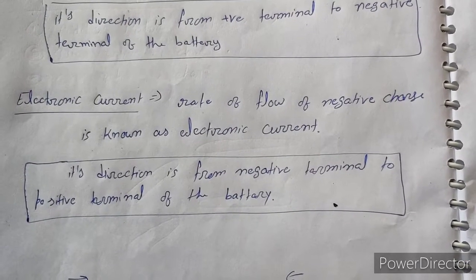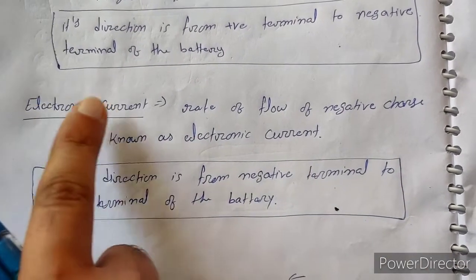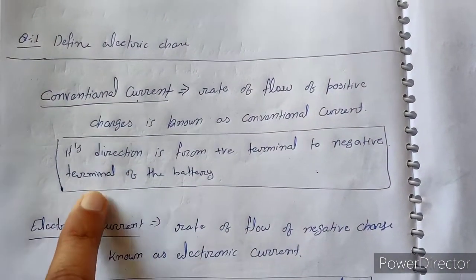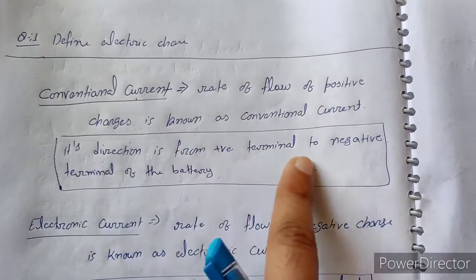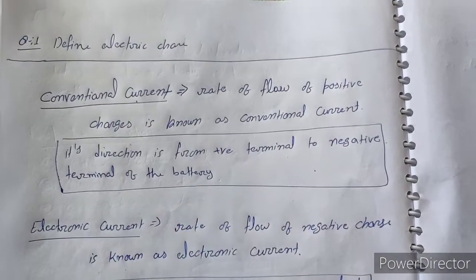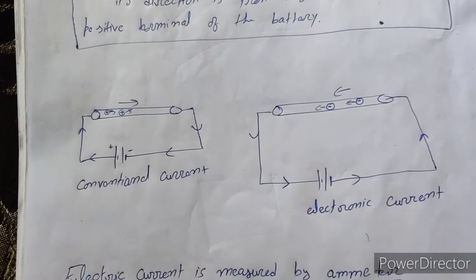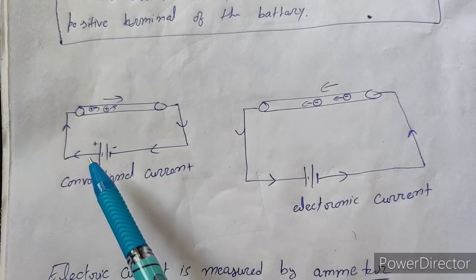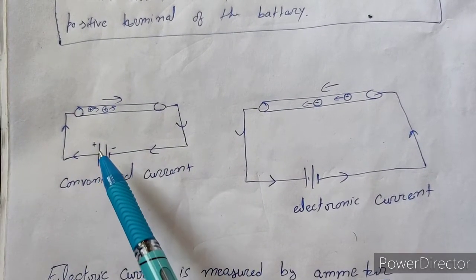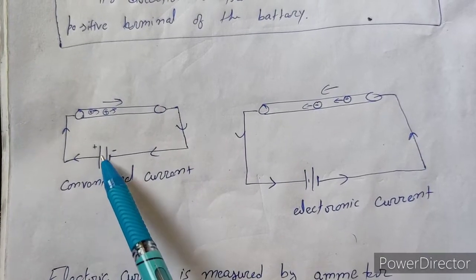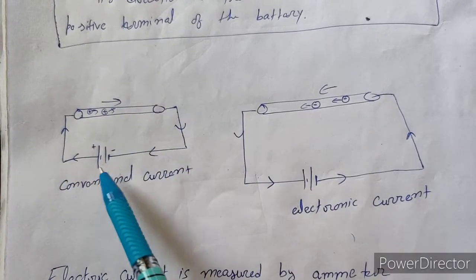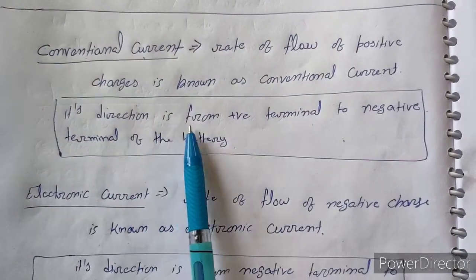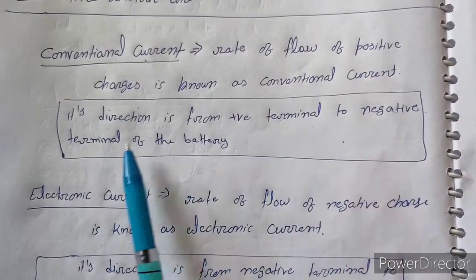The current due to electrons is known as electronic current. The direction of conventional current is from the positive terminal to the negative terminal of the battery, as shown here. There is a conductor and a battery connected with the conductor, and I have shown here that conventional current flows from the positive terminal to the negative terminal of the battery.